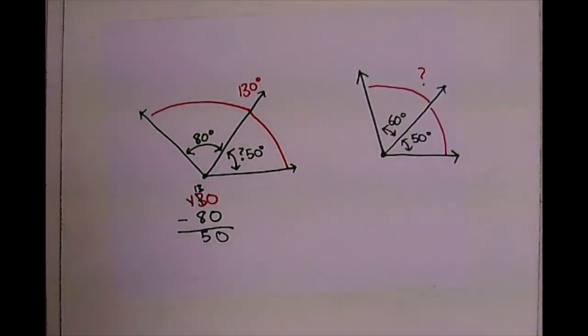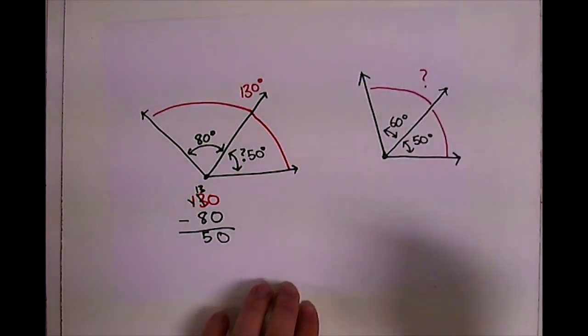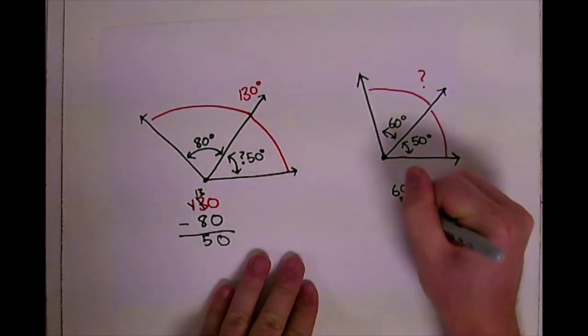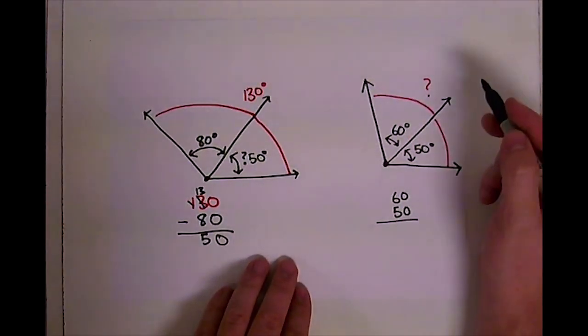Now, if we are given two angles and we're trying to figure out the total of both of those angles, well, let's write those down. We have 60 and we have 50 and we're trying to figure out the total.